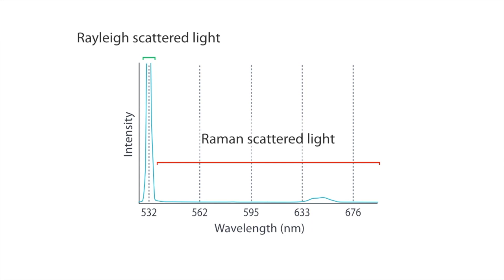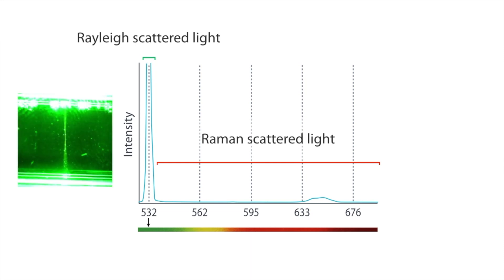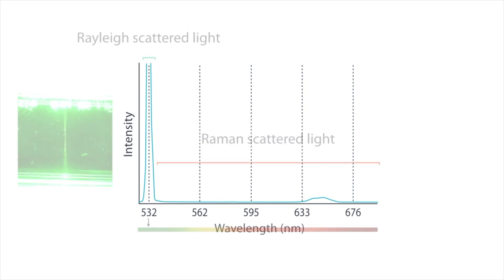Light at 532 nanometers is visible as green light, therefore at first a strong green light was observed. Raman scattered light, on the other hand, is too weak to be seen.